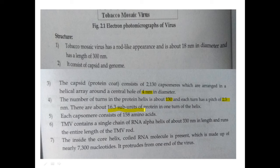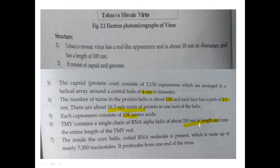Each capsomer consists of 158 amino acids. TMV consists of a single chain of RNA arranged in an alpha helix of about 330 nanometers, which runs the entire length of the TMV rod, coiled inside the core.